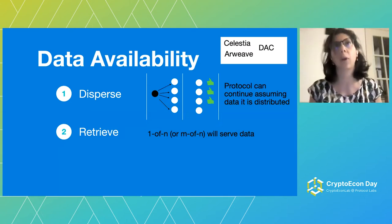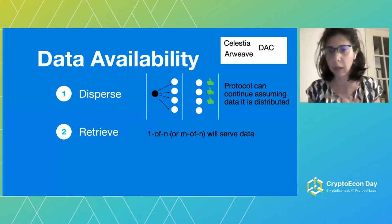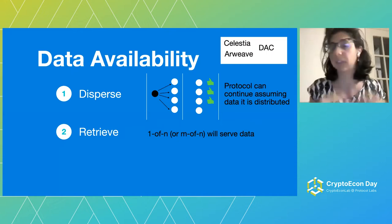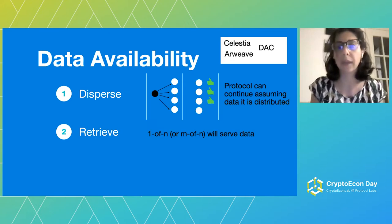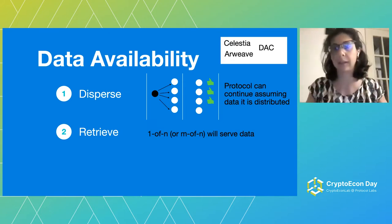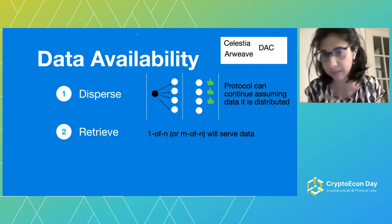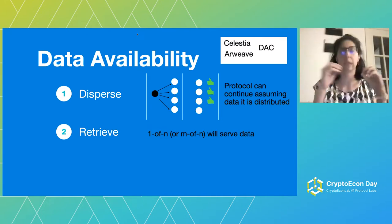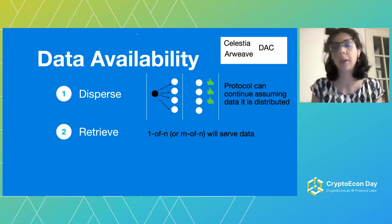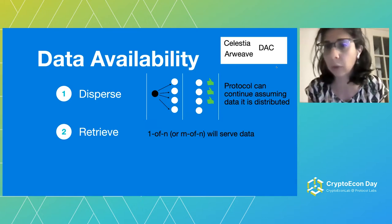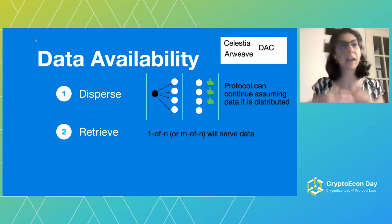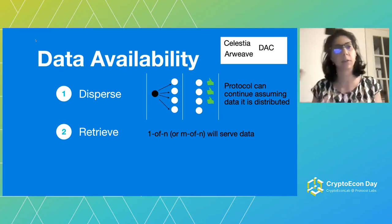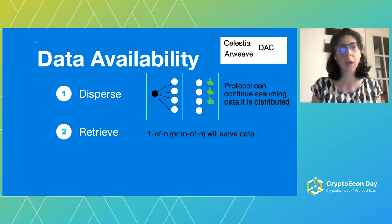If you are following recent scaling solutions for Ethereum or in general for blockchain, you may have heard about data availability. Data availability is a protocol that has two steps: the dispersal step and the retrieval step. First, you disperse the data in the storage network — the owner of the data, the client, does some pre-processing of the data, then essentially splits the data into many blocks and sends these to the network of storage providers. There is some kind of agreement, depending on the protocol, that this dispersal was done correctly, so that enough nodes received enough blocks. If this step is successful, we can later have the retrieval step that gives back the data.